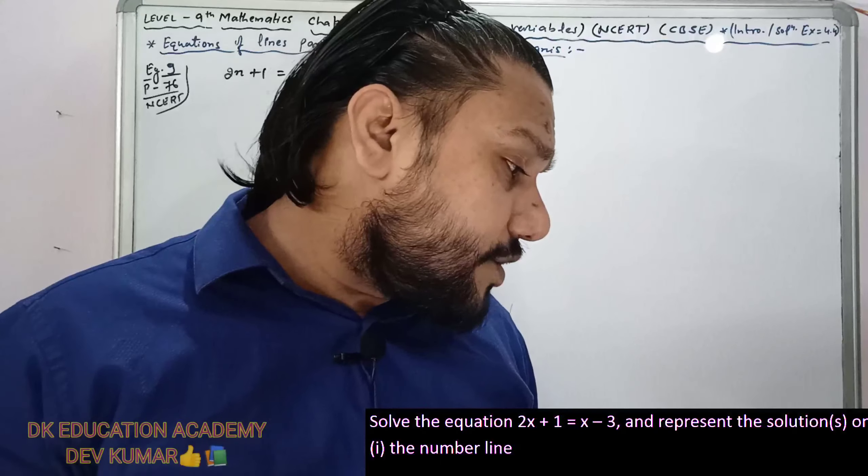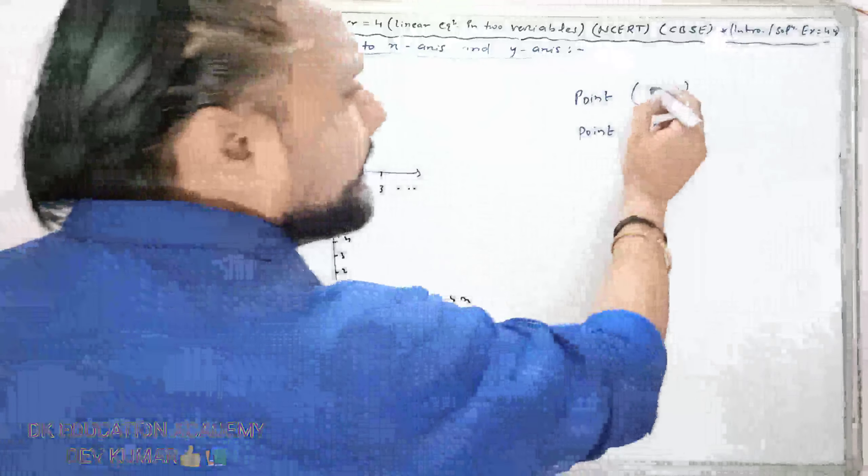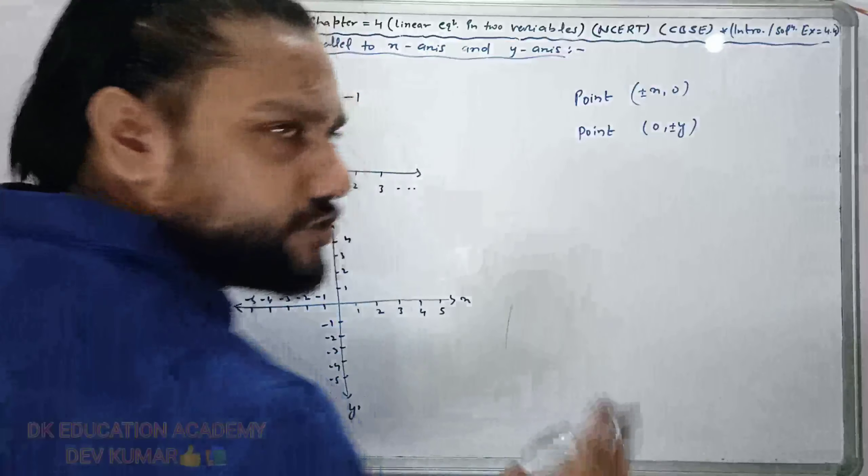The solution is a point. The point is x comma 0 or 0 comma y. Here x is minus 4, so the point is minus 4 comma 0. When you have a single point, but we need two points to make a line.